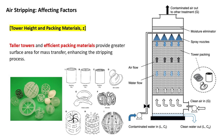Structured packing consists of carefully engineered materials arranged in an organized pattern within the column, such as corrugated sheets or grids made of metal or plastic. They provide highly uniform flow distribution, offer lower pressure drops compared to random packing, and show higher efficiency due to increased surface area and optimized liquid-gas contact. Nevertheless, they are more expensive than random packing and more complex to install and maintain.